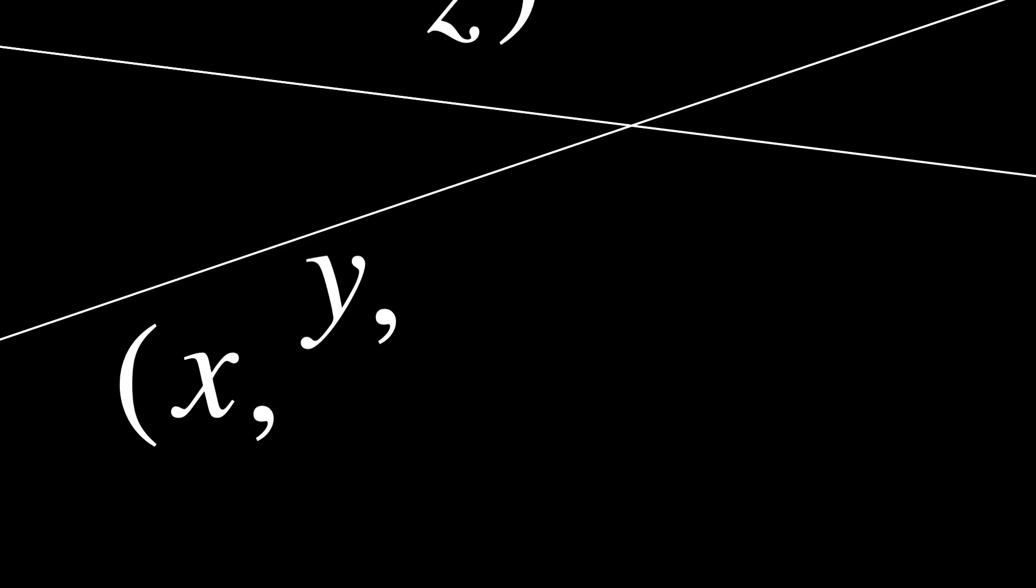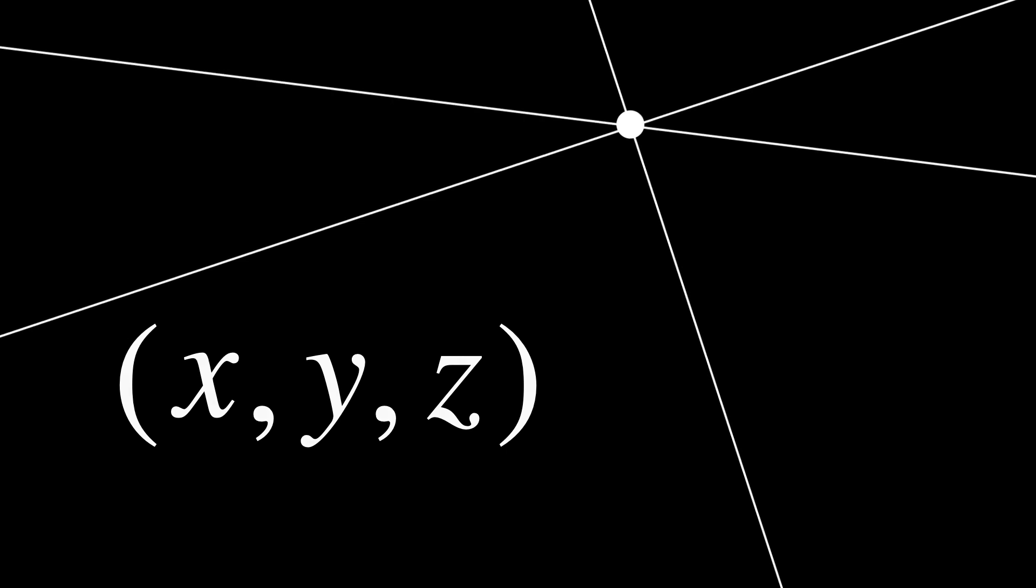One basic definition of dimension is the number of coordinates one needs to specify a point. Physicists would call it the degrees of freedom of the system. This can be used to justify the earlier understanding of the surface of a sphere being two-dimensional. Any point can be specified by giving it a longitude and latitude.